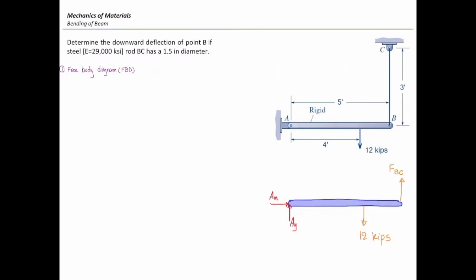So it's better to use sum of the moments about A so I can get rid of these two unknowns, and I can simply determine what is FBC.